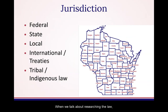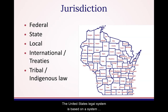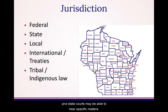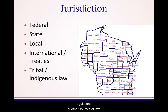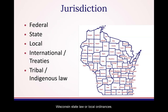When we talk about researching the law, one of the most helpful things to identify is the geographic boundary of the legal issue. The United States legal system is based on a system of jurisdiction. This can be applied to courts, where a system of federal and state courts may be able to hear specific matters. Geographic borders apply to researching statutory law, regulations, or other sources of law. Many library visitors need to research laws where they live, so a lot of your research might focus on finding Wisconsin state law or local ordinances.